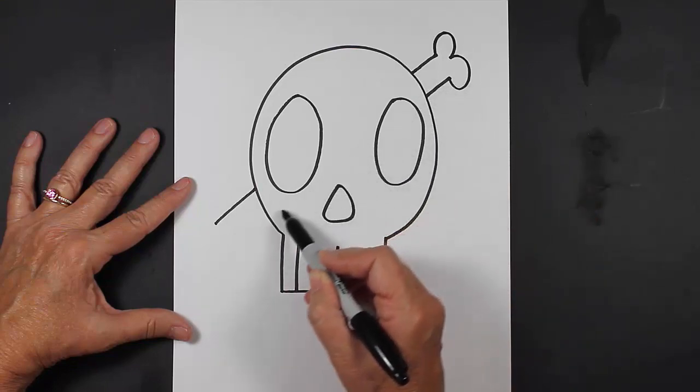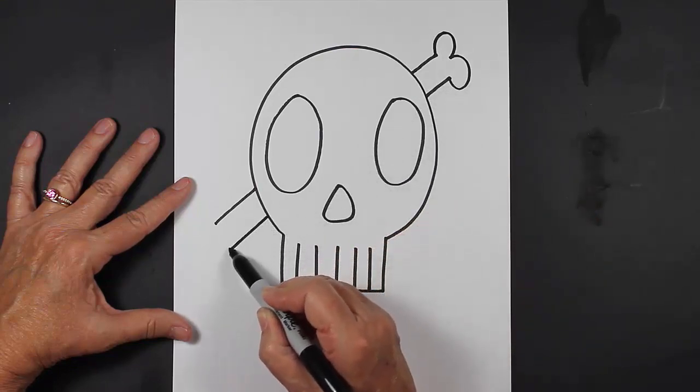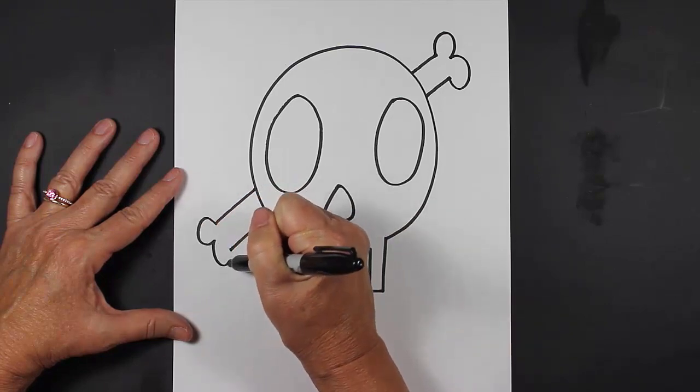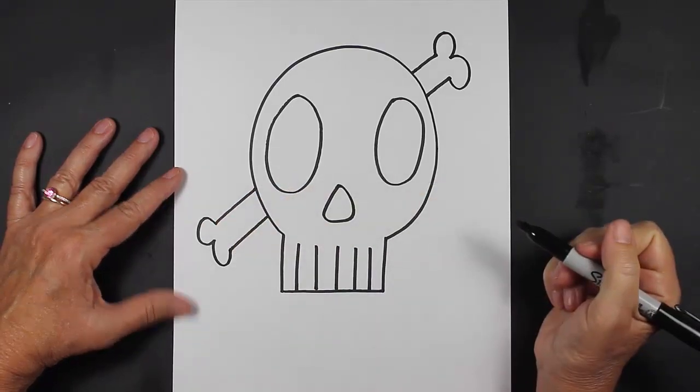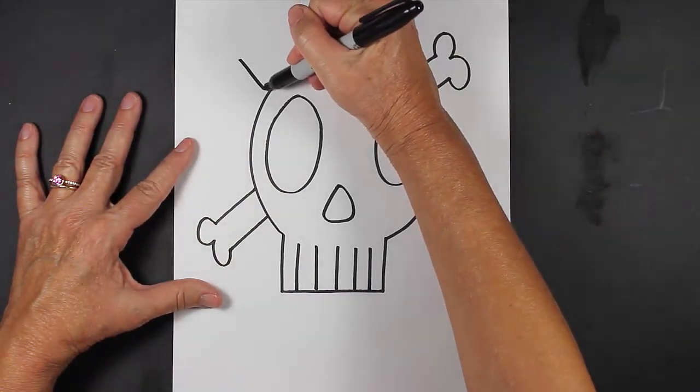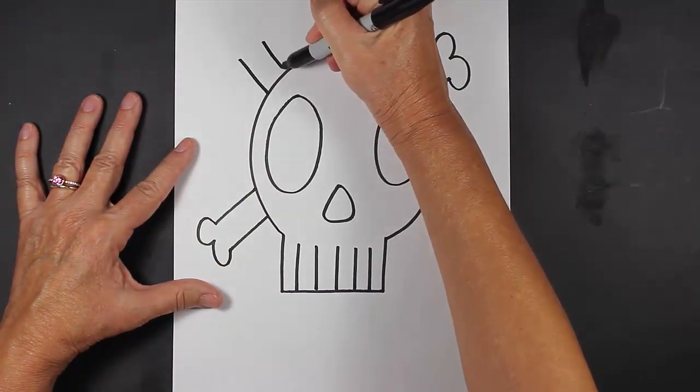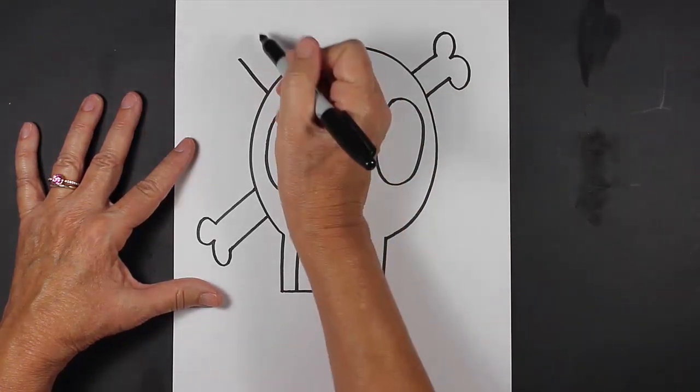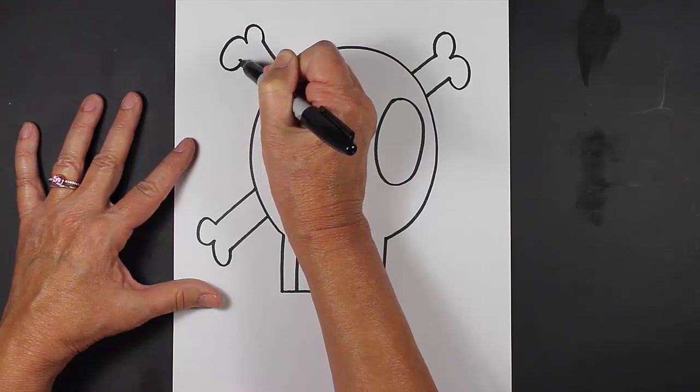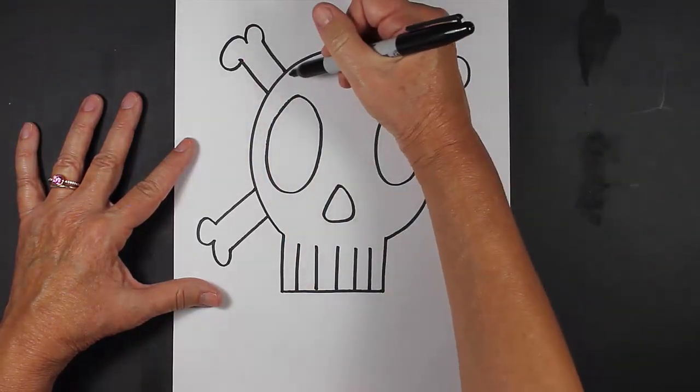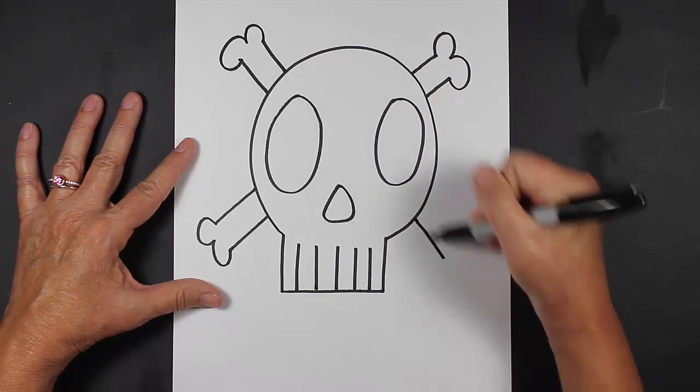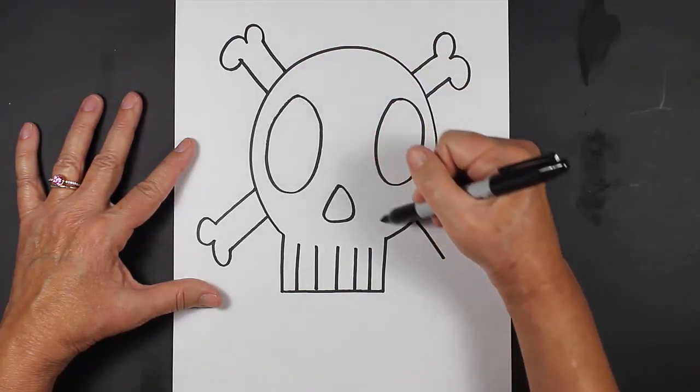We'll do the same thing on the other side. So you come out the top of the skull, you make a backwards number three, and then you follow that line down. And then you follow this line down and then you make the number three.